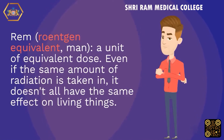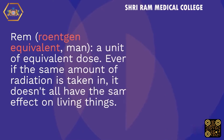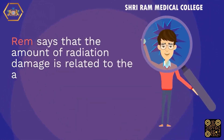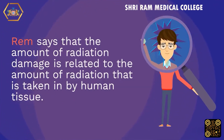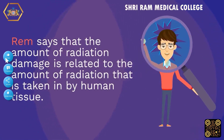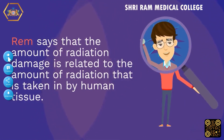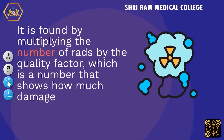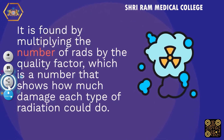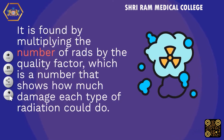Rem: it is found by multiplying the number of rads by the quality factor, which is a number that shows how much damage each type of radiation could do.